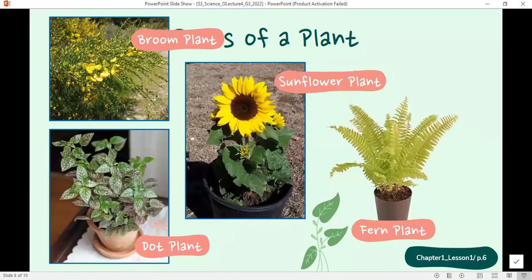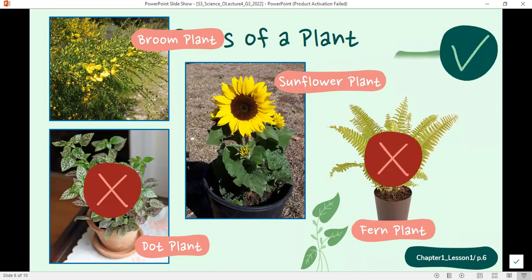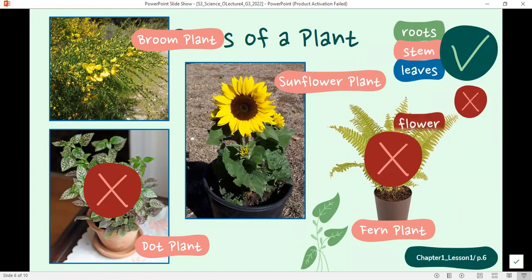Other examples, let's see. This is a plant, which is the dot plant. The dot plant is a plant that does not show flowers at all. So it has roots, stem, leaves, but no flowers. The fern plant is another example. The fern plant has roots, stem and leaves, but no flowers. So again, the dot plant and the fern plant show roots, stem and leaves, but they do not show flowers.